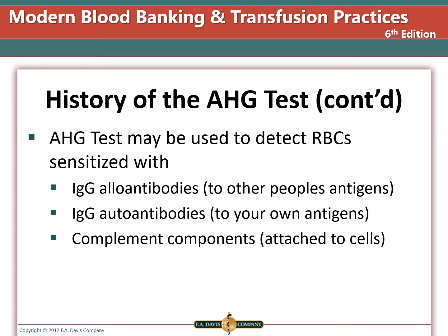We can use the reagents to detect red cells sensitized with IgG allo antibodies, that is, antibodies to other people's antigens. We can use it to detect autoantibodies, that is, antibodies that react to the patient's own cells. We can also detect cells that are coated with complement components. Some anti-human globulin can bind to both antibodies and complement, while other reagents will bind one or the other. Monospecific AHG will only bind to one type, and polyspecific will react with multiple types.